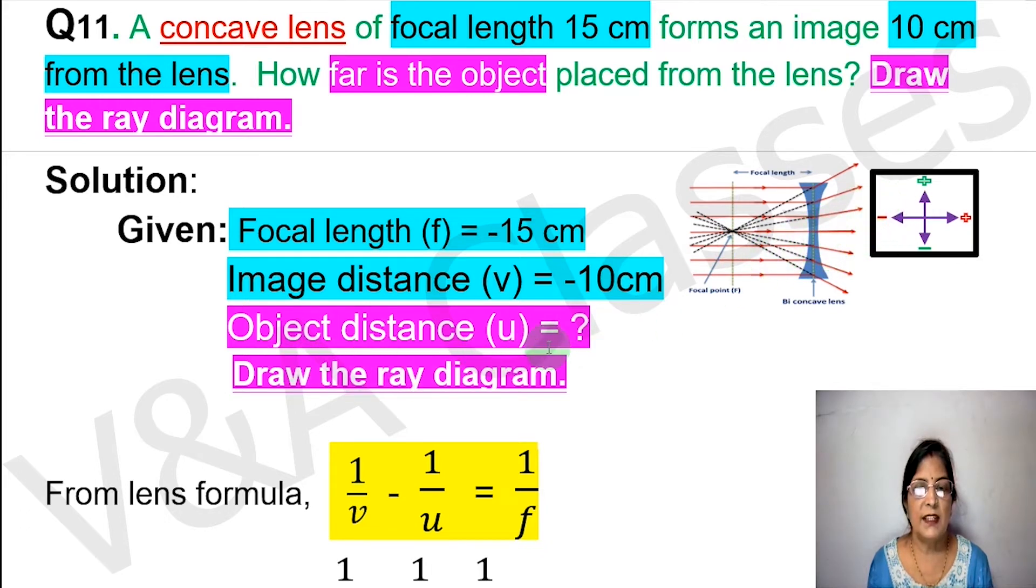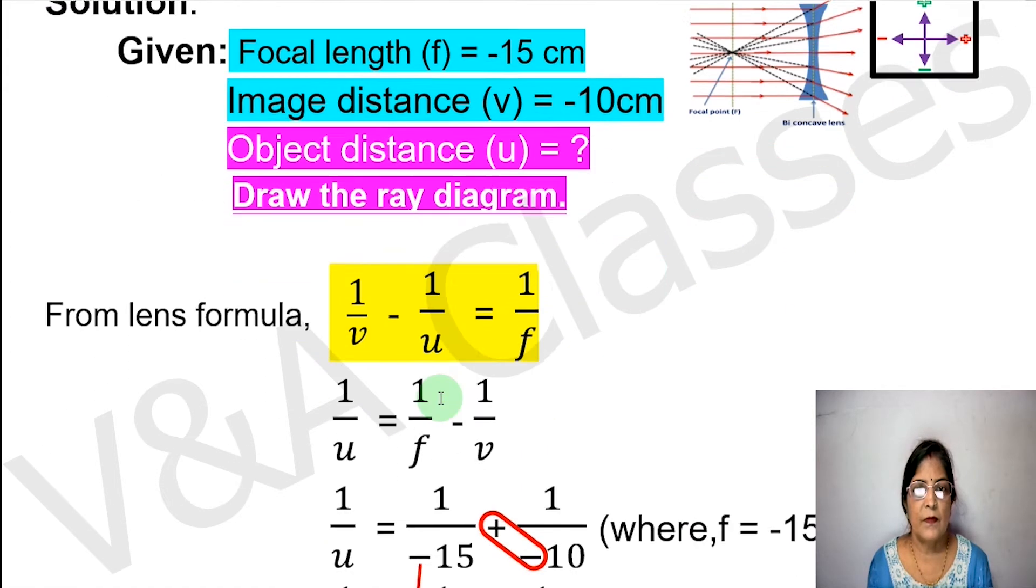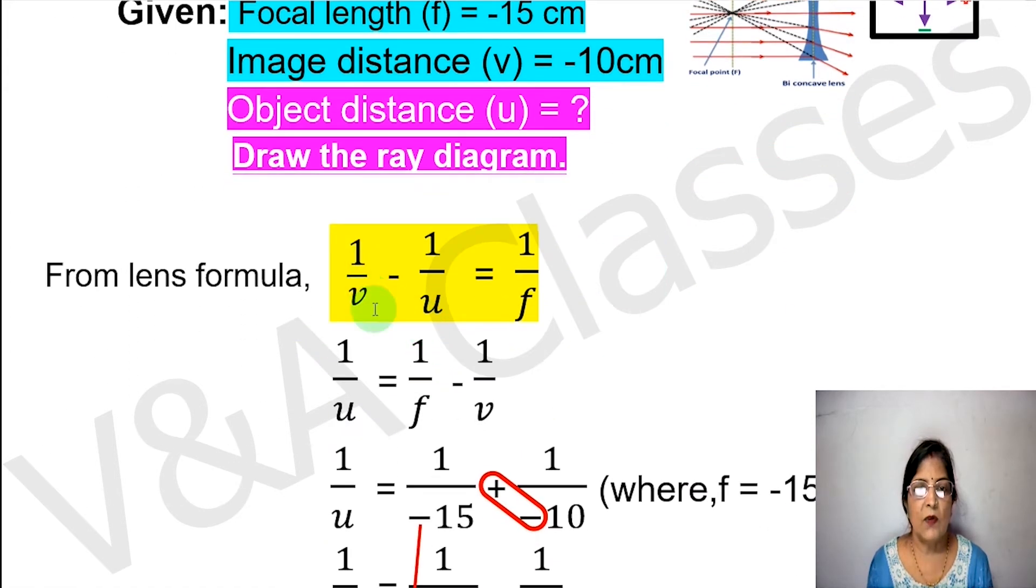So we will use the lens formula: 1/v minus 1/u equals to 1/f. Because we have to find object distance, we will rearrange this formula. The link for detailed explanation is in the description box.